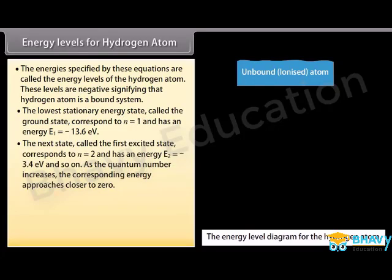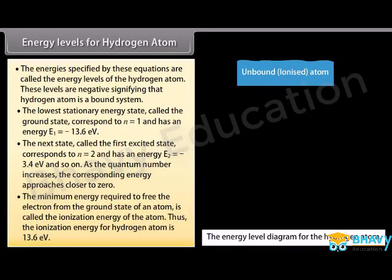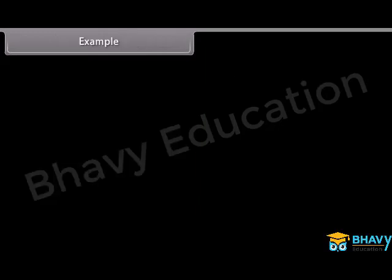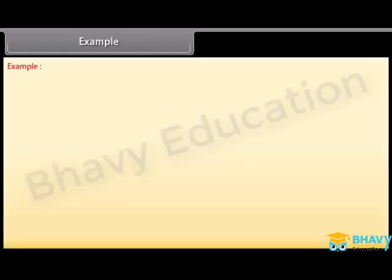The first excited state corresponds to n = 2 with energy E₂ = −3.4 eV, and so on. As the quantum number increases, the energy approaches zero. The minimum energy required to free the electron from the ground state is called the ionization energy of the atom. The ionization energy of hydrogen is 13.6 eV, which corresponds to the maximum wavelength of the hydrogen spectrum.